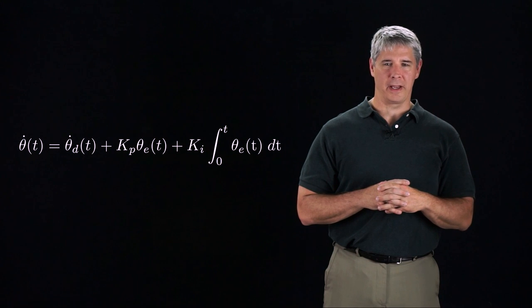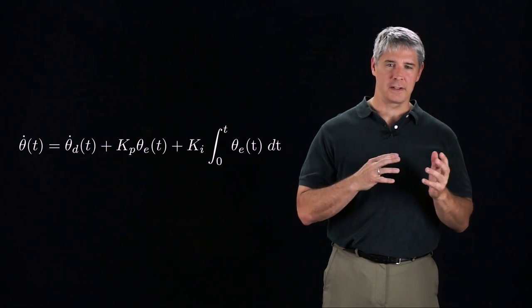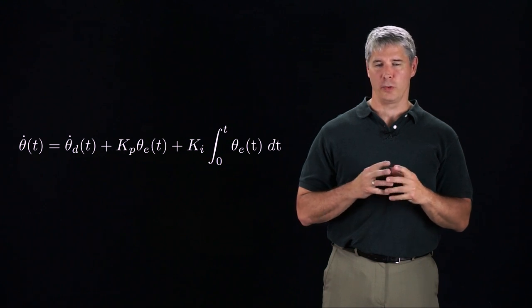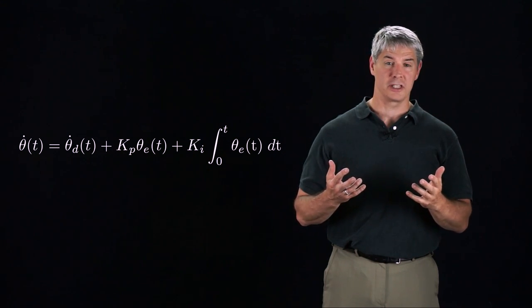For the case where the controller commands joint velocities, in the previous video we derived a feedforward plus PI feedback controller when the desired motion is expressed in joint space.